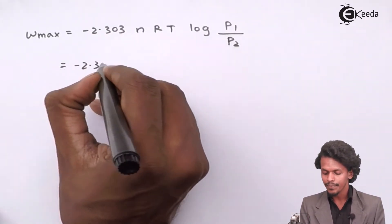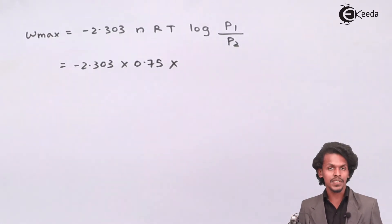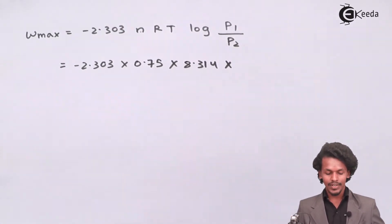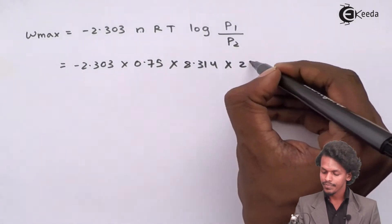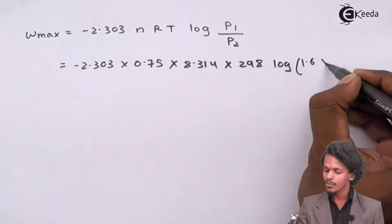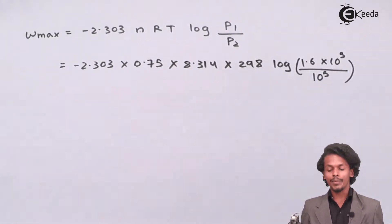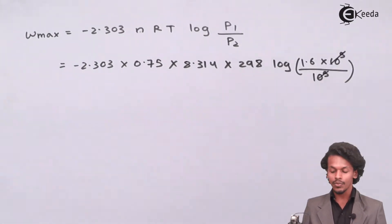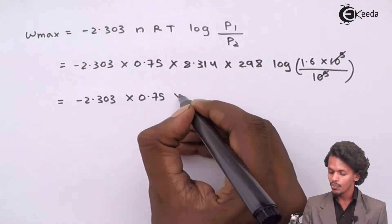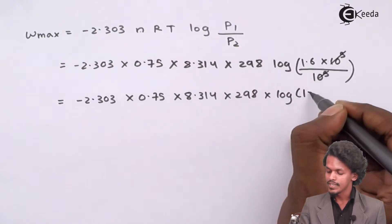Substituting: Wmax = −2.303 × 0.75 × 8.314 × 298 × log₁₀(1.6 × 10⁵ / 10⁵). The 10⁵ terms cancel out, leaving: Wmax = −2.303 × 0.75 × 8.314 × 298 × log₁₀(1.6).